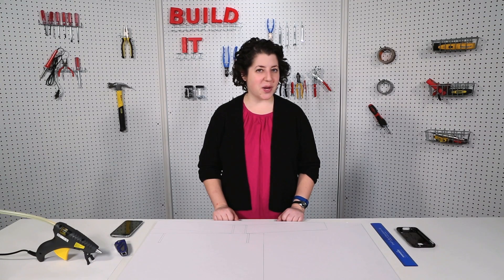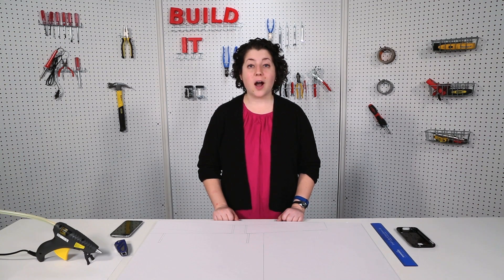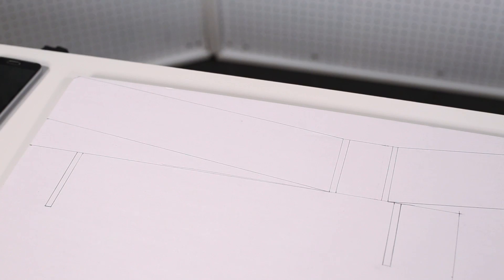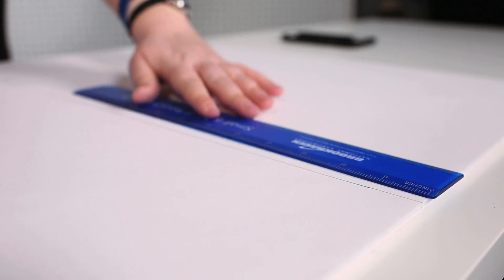First, using the template on our website, trace two shapes onto the foam board: a large square base and a V-shaped bridge. Then, using the ruler and the X-Acto knife, start cutting.